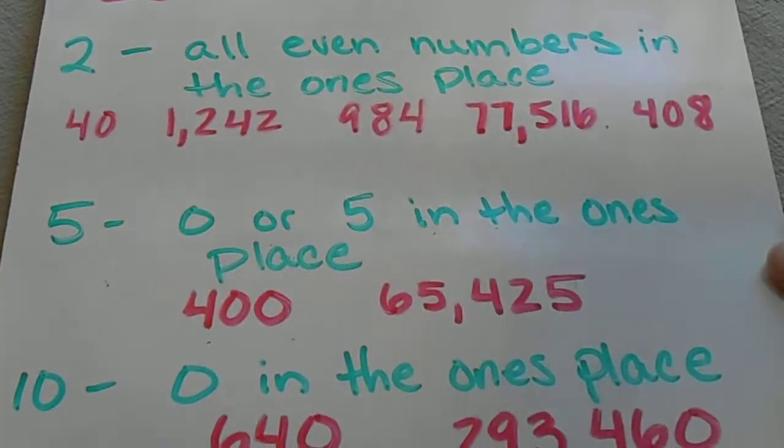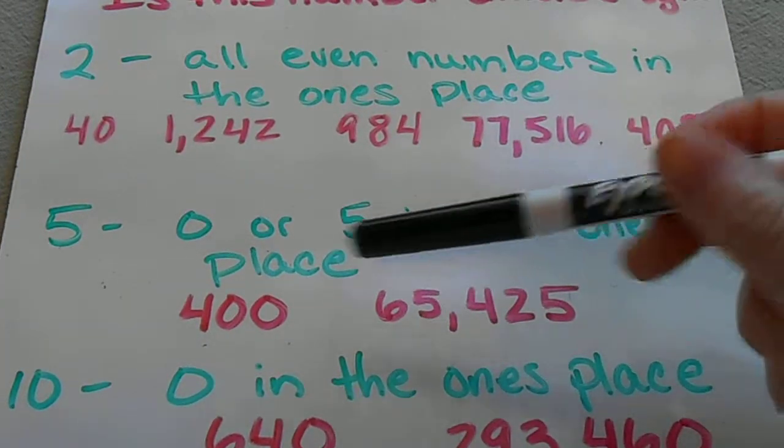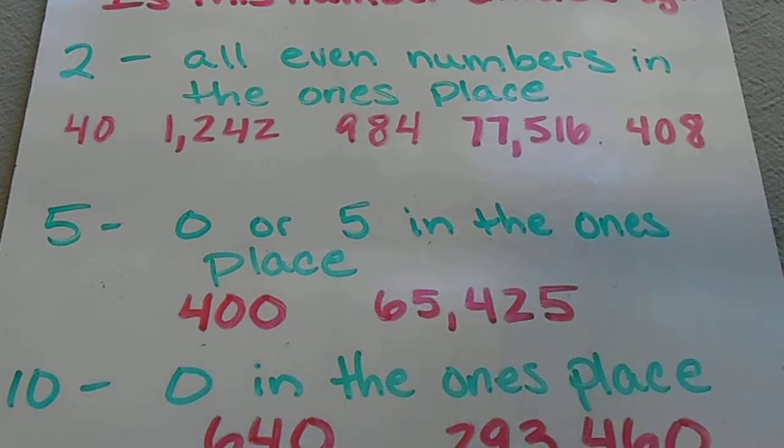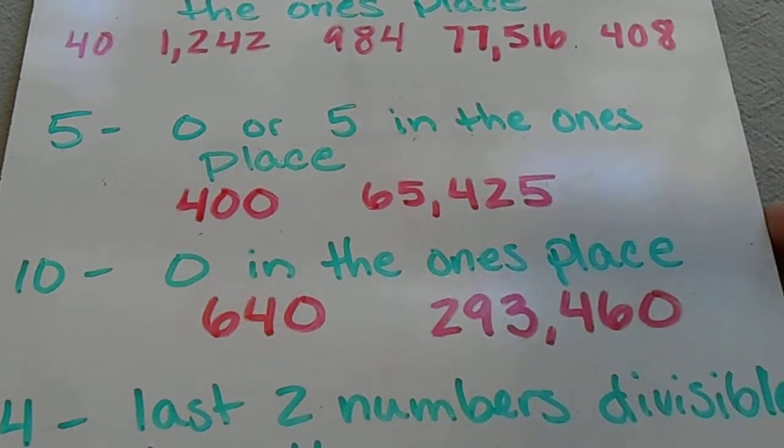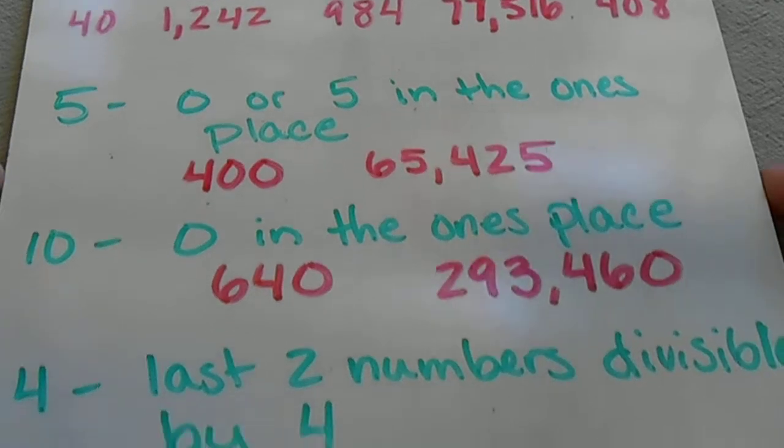To determine if a number is divisible by 5, it has to either have a 0 or a 5 in the ones place. If it's divisible by 10, it's going to have just a 0 in the ones place.